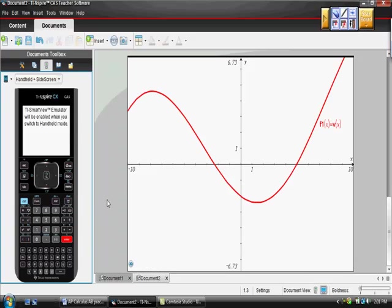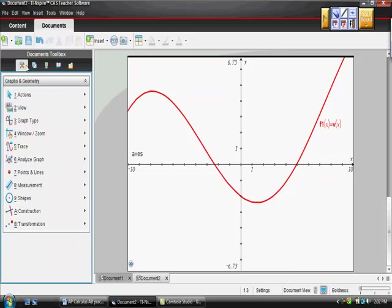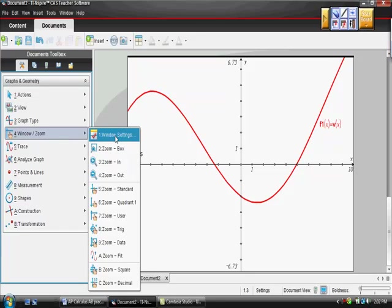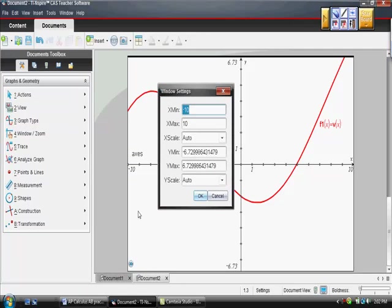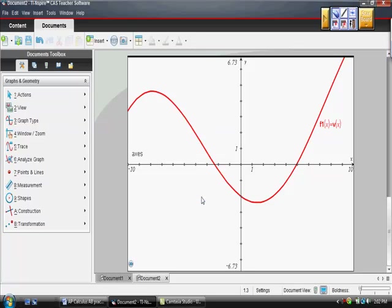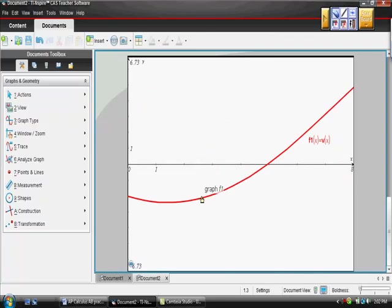This function looks pretty much like what I thought it was going to look like. We're only interested in this function from time 0 to time 8. I'm going to adjust the window. Go to your menu, Windows Setting, and set it from 0 to 8. I'm going to make the X scale equal to 1, then hit OK. There's our function.